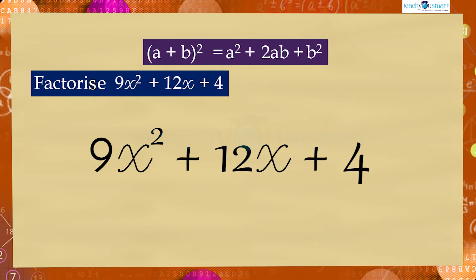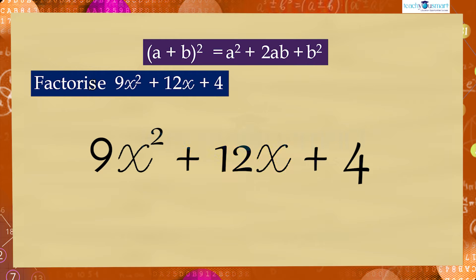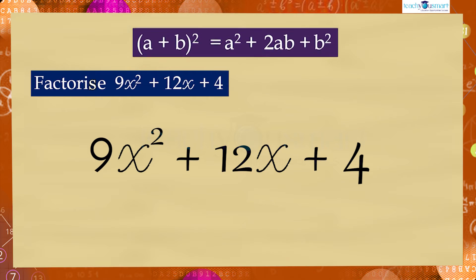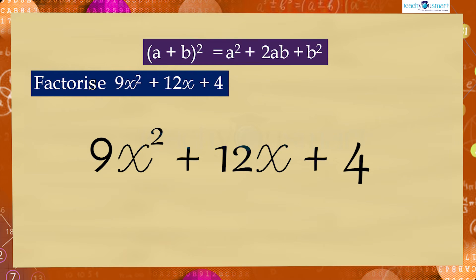...and the middle term has a positive sign, we will try to apply the identity (a + b)² = a² + 2ab + b². Therefore, first we have to find the values of a and b from the given expression.